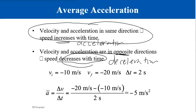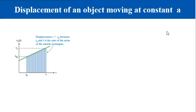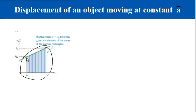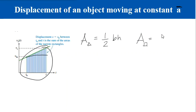Now, how do we determine the displacement of an object moving at constant acceleration? Looking at the velocity versus time graph, since the object is moving in a positive forward direction, the displacement can be determined by looking at the area under the curve. We have two different shapes: a triangle and a rectangle. The area of a triangle is one-half base times height, and the area of a rectangle is base times height.